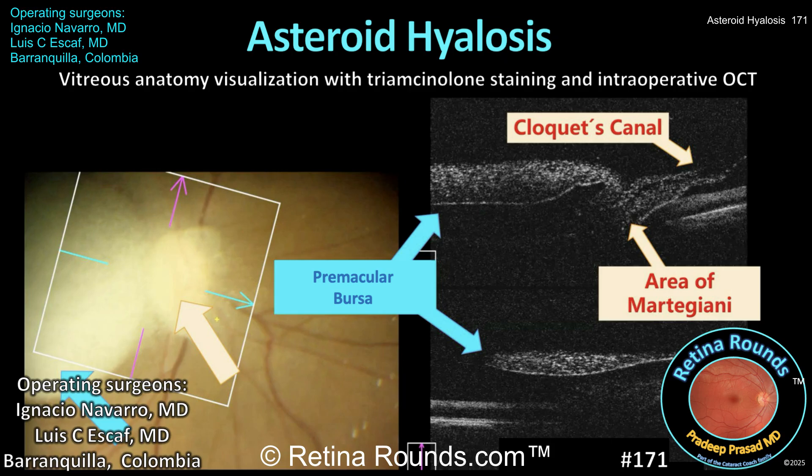Vitrectomy for asteroid hyalosis is rarely necessary, but may be indicated for impaired visualization of the retina even with alternative imaging modalities, for application of laser photocoagulation such as PRP, or more rarely when the asteroid bodies are visually significant. Vitrectomy in cases of asteroid hyalosis can be challenging due to the frequent absence of a PVD or due to the presence of vitreous schisis.